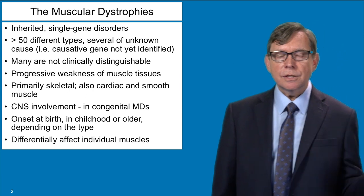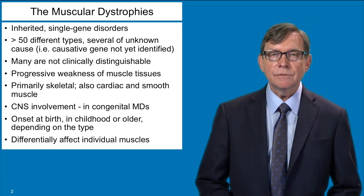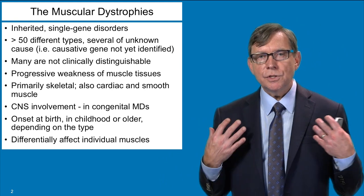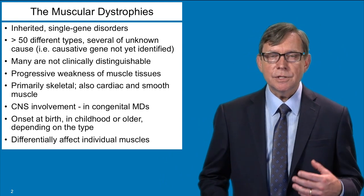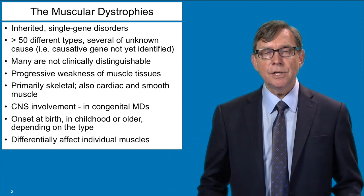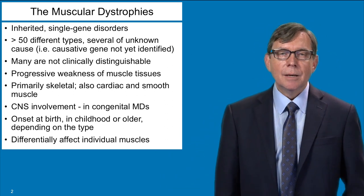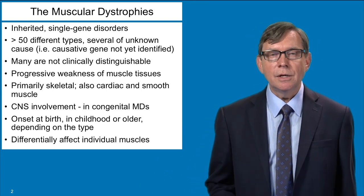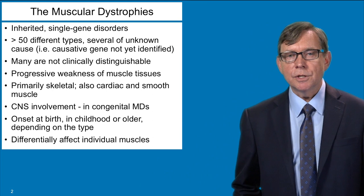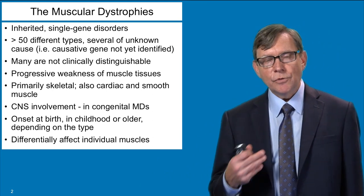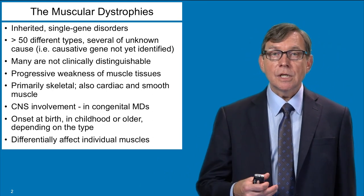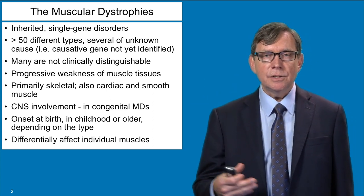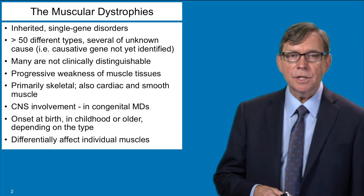The characteristic of all the different muscular dystrophies is that there's a progressive and ongoing weakness of muscle tissue. The major tissue affected is the skeletal muscle, the limb muscles, and all the major structural muscles of the body. But many forms of muscular dystrophy also affect cardiac muscle — the heart is a muscle as well — as well as different types of smooth muscle throughout the body. Some forms, particularly the congenital muscular dystrophies, can also have involvement of the central nervous system that can lead to developmental delay and other CNS problems.